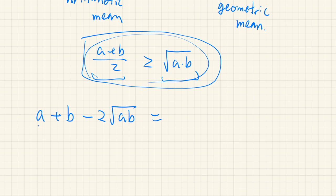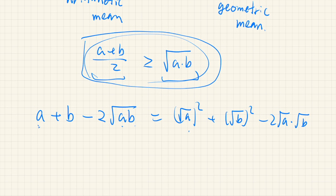Since we are assuming that a and b are non-negative, we can write a as (√a)² and b as (√b)², and √(ab) = √a · √b. Factorizing, we get (√a − √b)². Since this is a real number squared, it is always non-negative, so the expression is always greater than or equal to 0, and we are done.